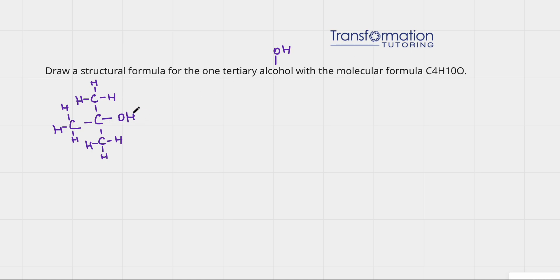We have an alcohol because we have an OH group. And our alcohol is tertiary because the OH group is attached to a carbon that is attached to three other carbons. One, two, three. Therefore, this is a tertiary alcohol.